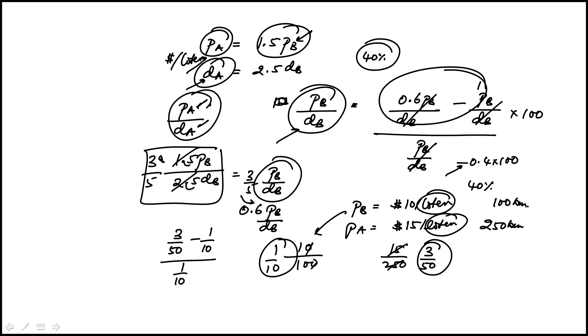So 3/50 minus 1/10. If you multiply top and bottom by 10, you would get 3/5 minus 1 times 100, and this would be 2/5. The minus tells you that it's 40% lower.